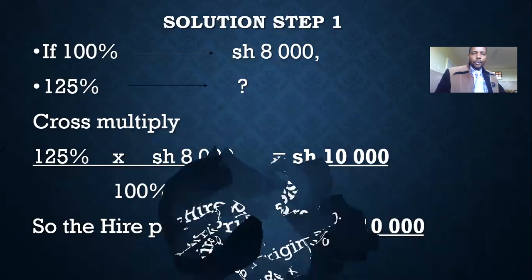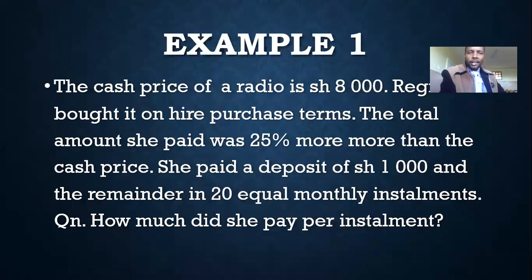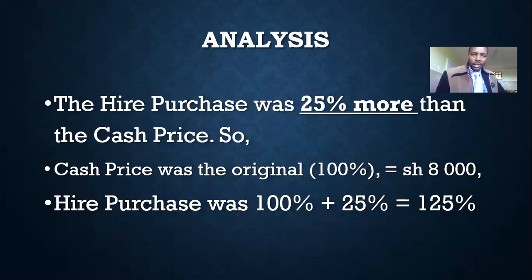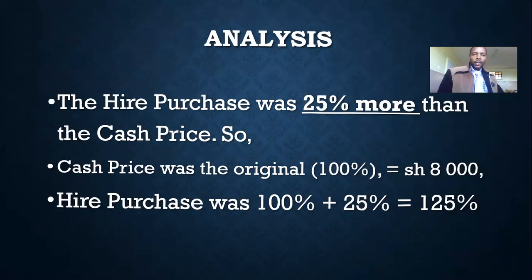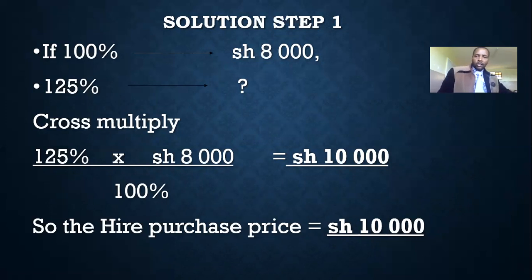Let me repeat. From the question, we were told the hire purchase price was 25% more than the cash price. So the cash price is the original 100%, and the hire purchase is 125% because it was 25% more. So if 100% represents 8,000, what about 125%? We cross multiply and get 10,000 shillings. So the hire purchase price is 10,000 shillings.